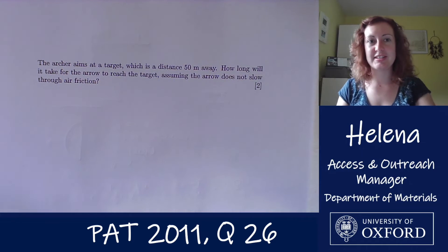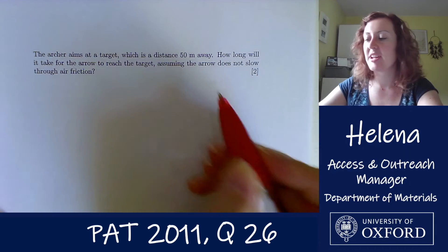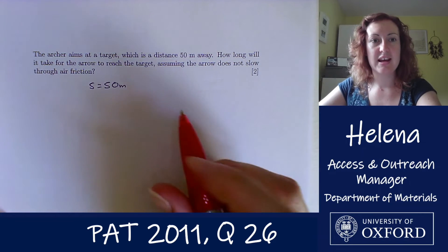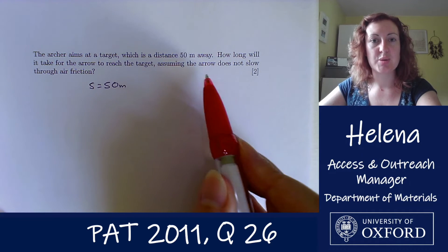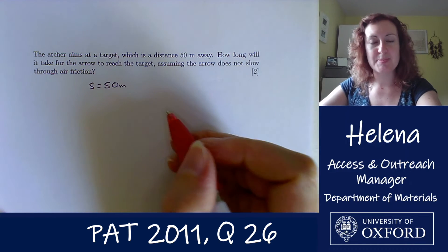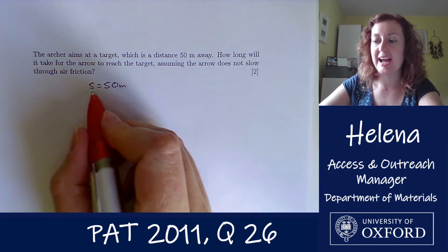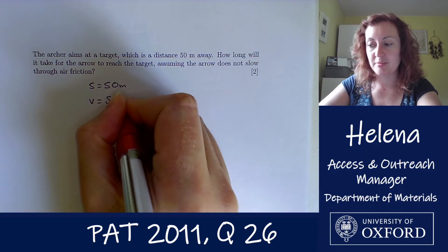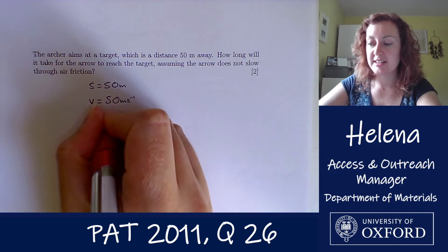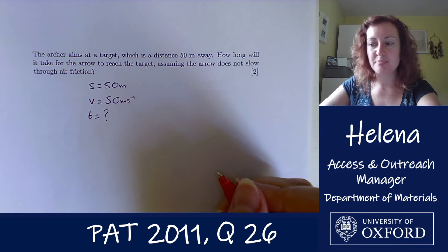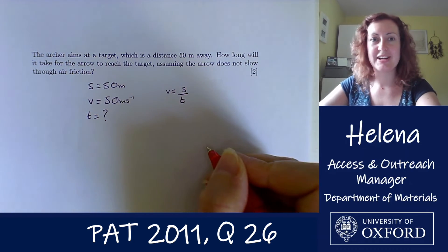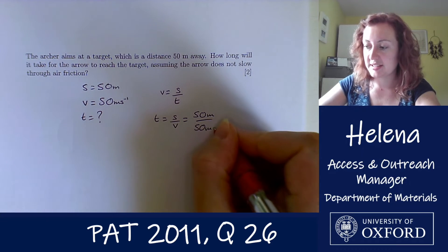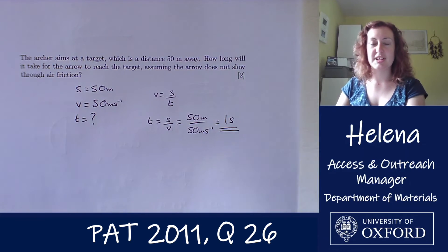So what does the next part of the question tell us? So the archer is aiming at a target, which makes sense, which is a distance of 50 meters away. How long will it take for the arrow to reach the target, assuming the arrow does not slow through air friction? So for this part question, we simply have nice, easy, uniform motion. So we have the distance that the arrow is going to travel between the archer and the target of 50 meters. We've already calculated the velocity as 50 meters per second. And we want to find the time that it's going to take for the arrow to reach the target. So with a simple speed equals distance over time equation, we can rearrange that to get the time, which is the distance over the speed, which is 50 meters divided by 50 meters per second, which gives us a time of one second. It's a nice simple part question there.